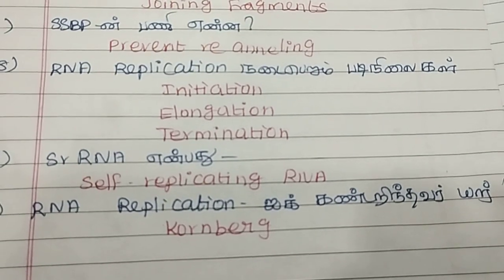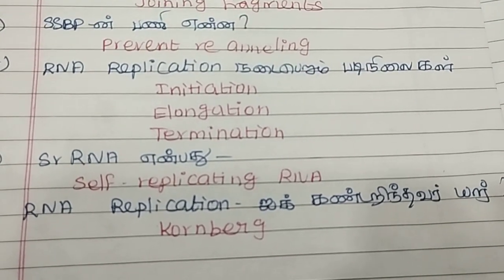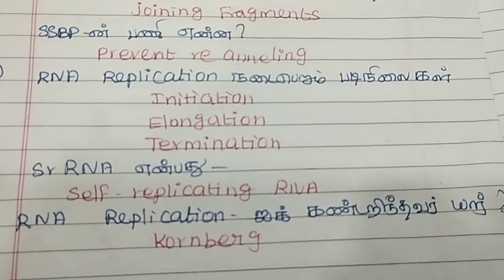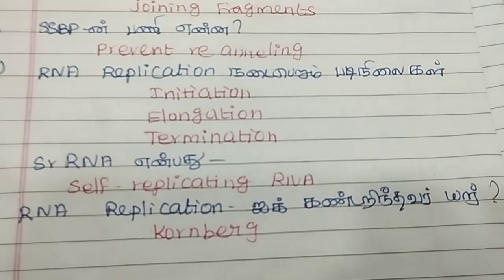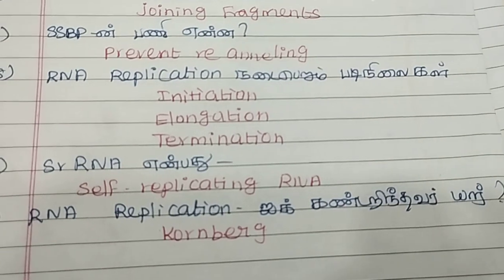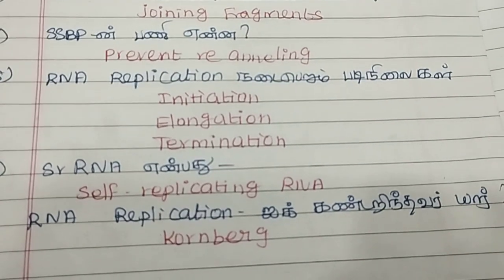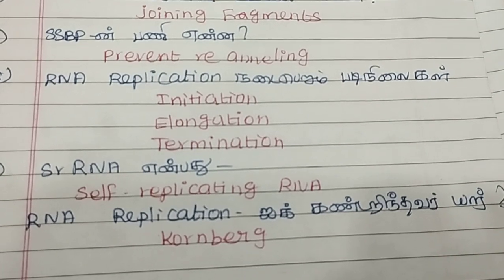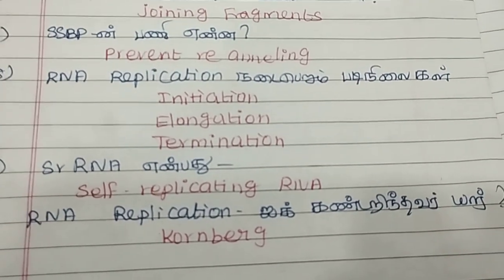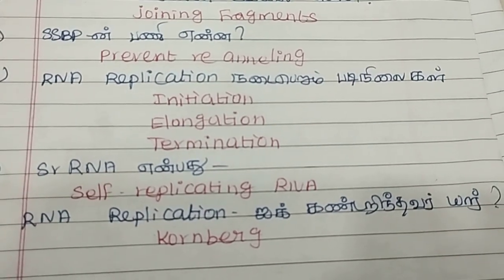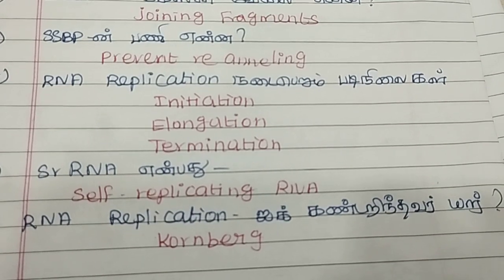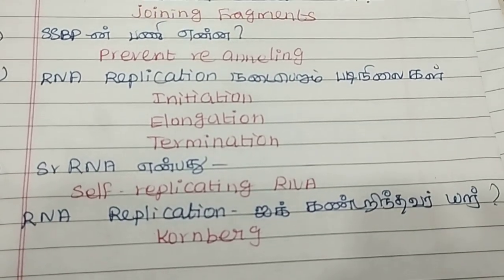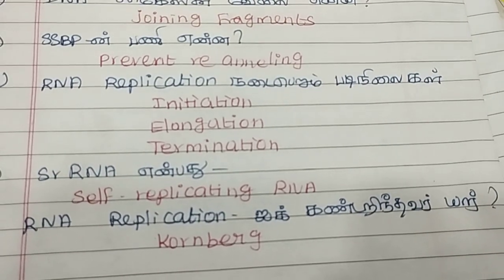SRRNA 80 — this is self-replicating RNA. RNA replication is discovered by Coremberg.